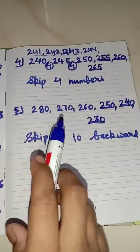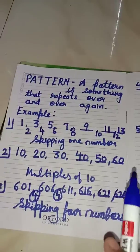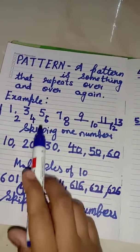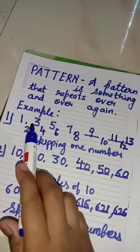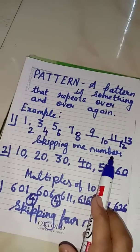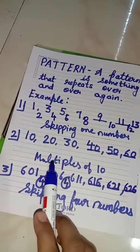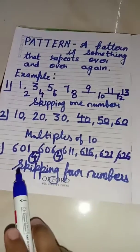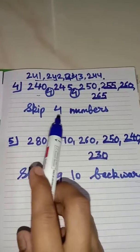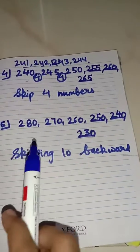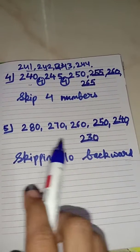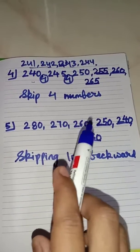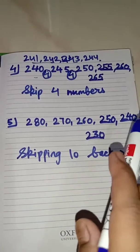So students, I hope you understand this concept. A pattern is something that repeats over and over again. In the first question we skipped one number. In the second question it was multiples of 10. In the third question we skipped 4 numbers. In the fourth question we again skipped 4 numbers. And in the fifth question we skipped 10 numbers backward. I hope this whole concept is clear to you. Please revise it at home. Thank you.